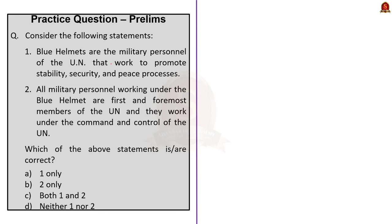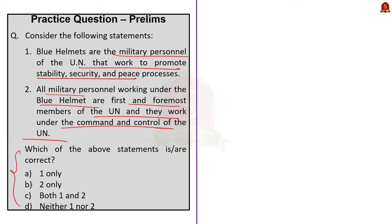Consider the following statements: Blue helmets are the military personnel of the UN that work to promote stability, security, and the peace process. All military personnel working under the blue helmet are first and foremost members of the UN and work under the command and control of UN. The correct answer is option A: one only. The second statement is incorrect because all military personnel working under the blue helmet are first and foremost members of their own national armies and are then seconded to work under the command and control of the UN.